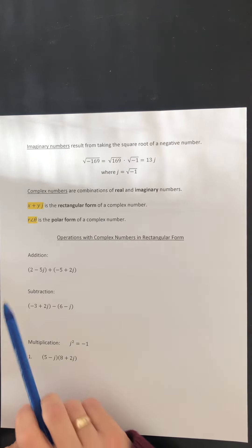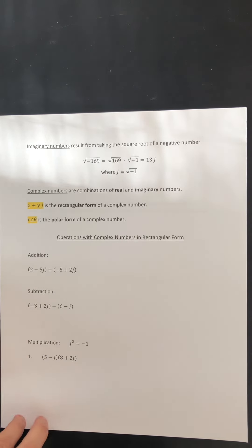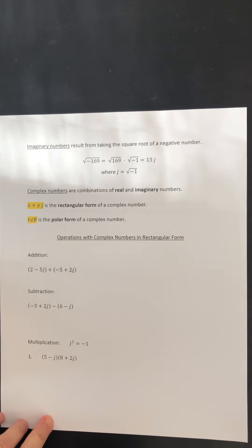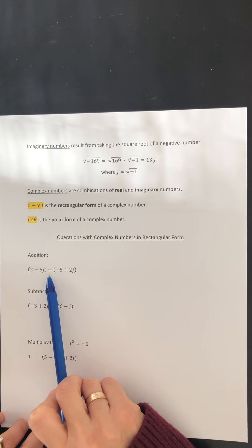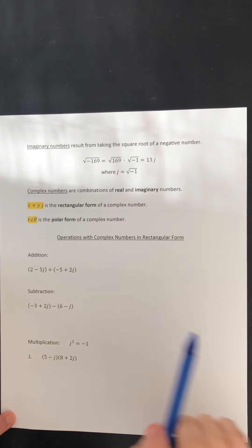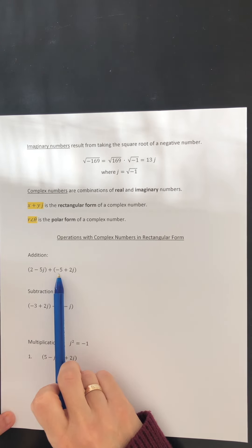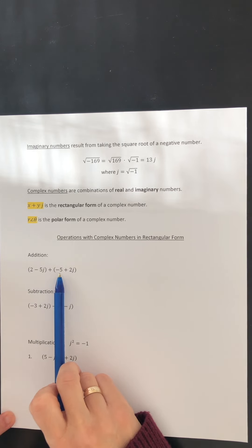Let's get started with addition, which is the simplest operation to perform. Here we have two complex numbers in rectangular form and we are adding them. When we add these numbers, all we have to do is collect like terms. We have a real number of 2 here and a real number of negative 5, so we start by adding those two real numbers together.